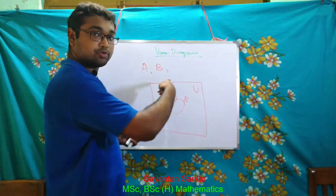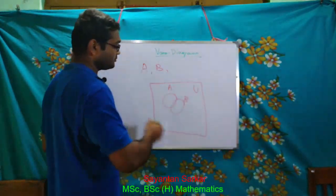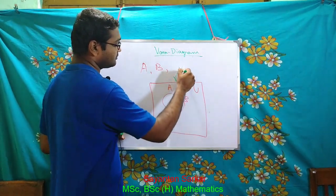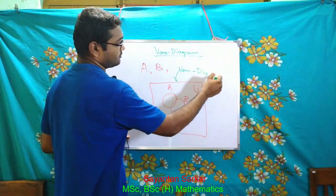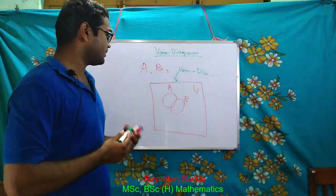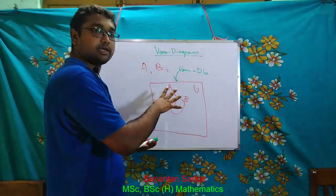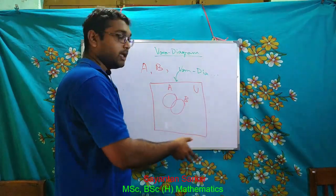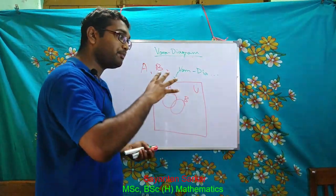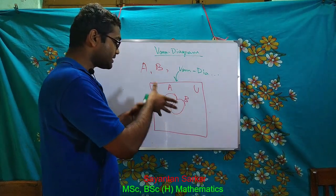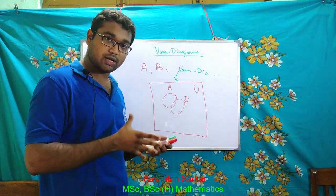This diagram I have drawn is known as a Venn diagram. A Venn diagram is nothing but a schematic representation of several sets, and from it we shall pictorially explain properties like intersection, union, and everything.